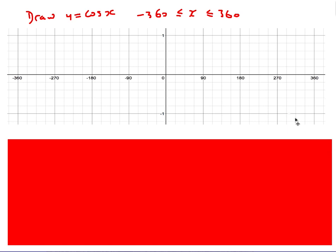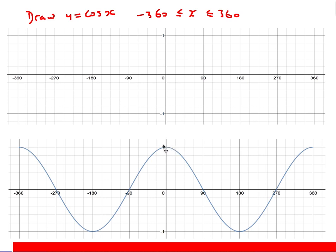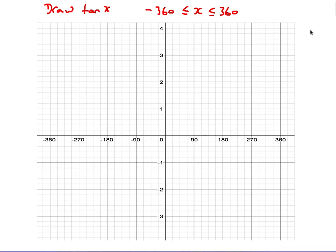For cos x, again with domain between -360 and 360, this time we start at 1, then zero at 90, negative one at 180, zero at 270, and back to one at 360. As before, if you can't remember it, stick some values in the calculator — when x is zero, cos x is one, so I know it starts at that point.